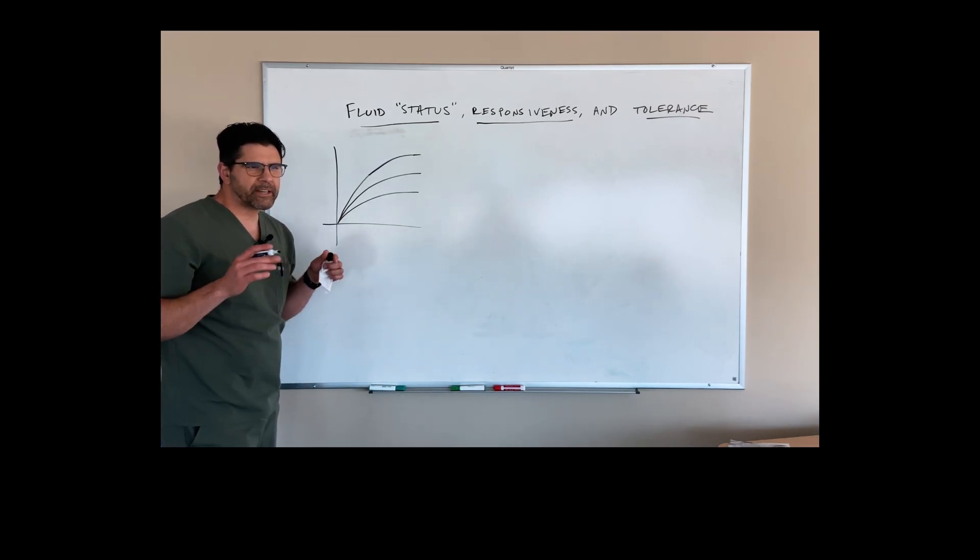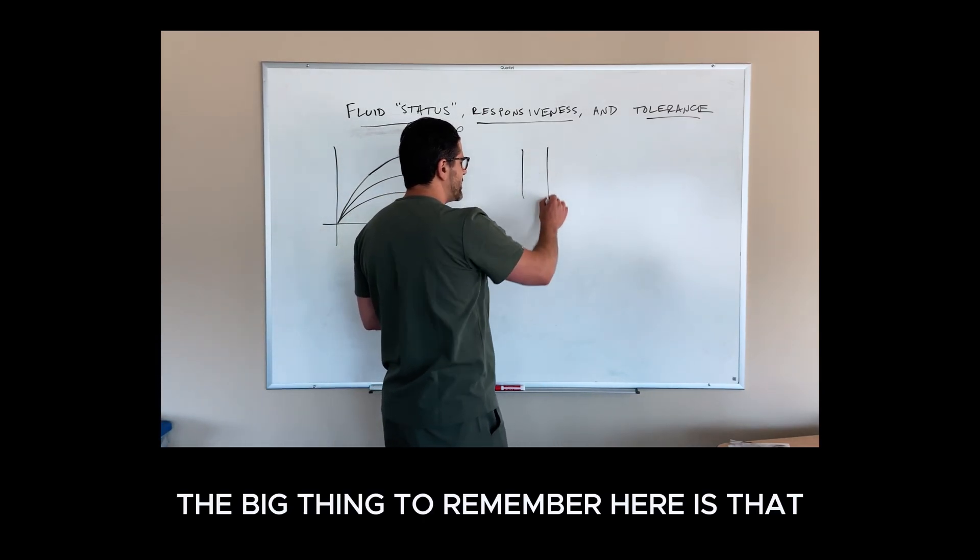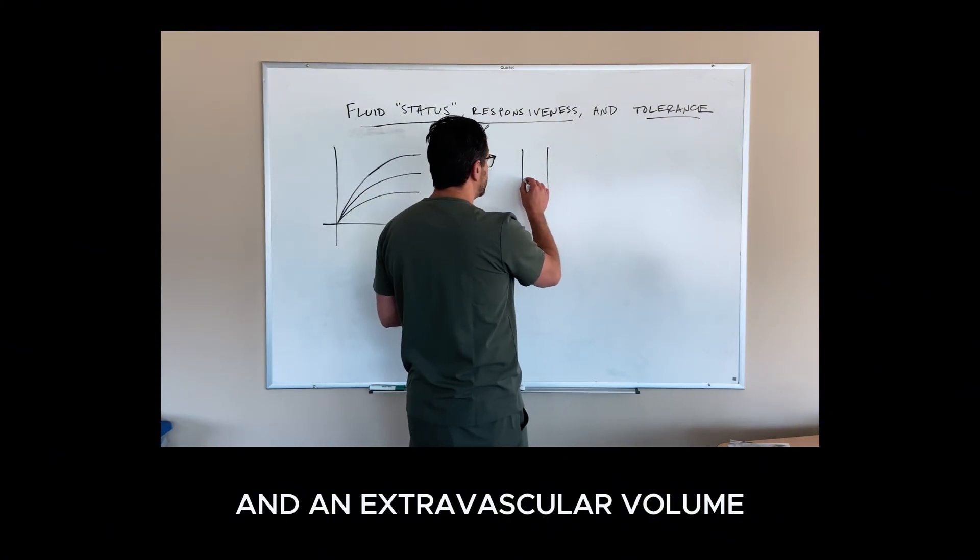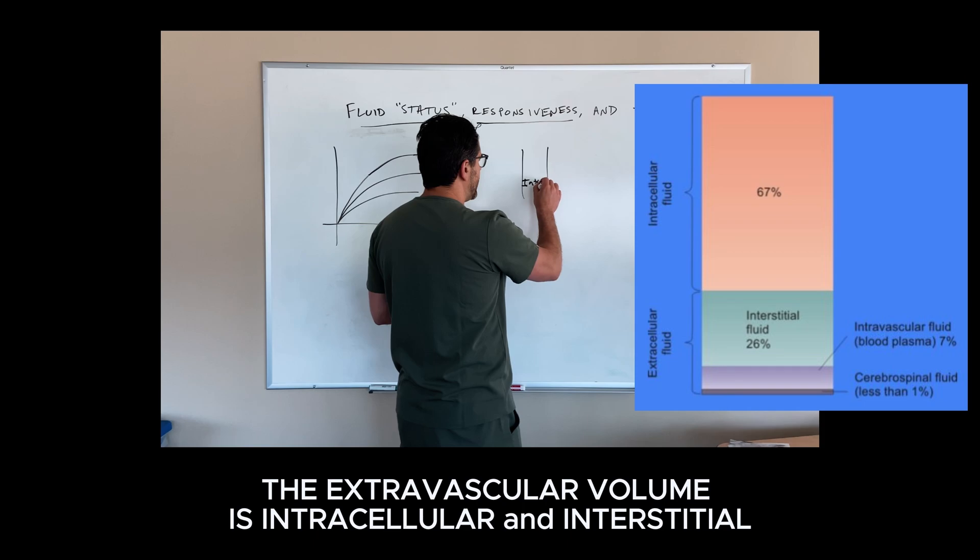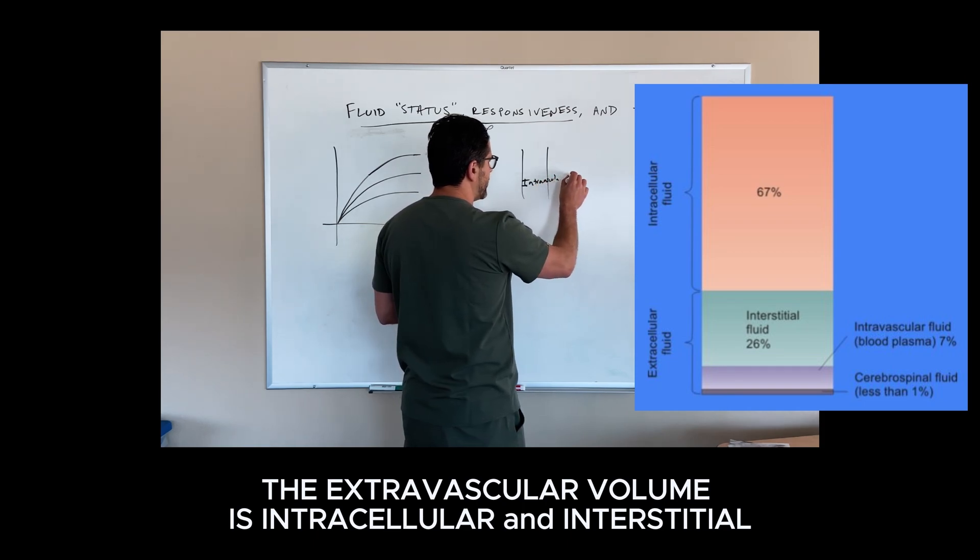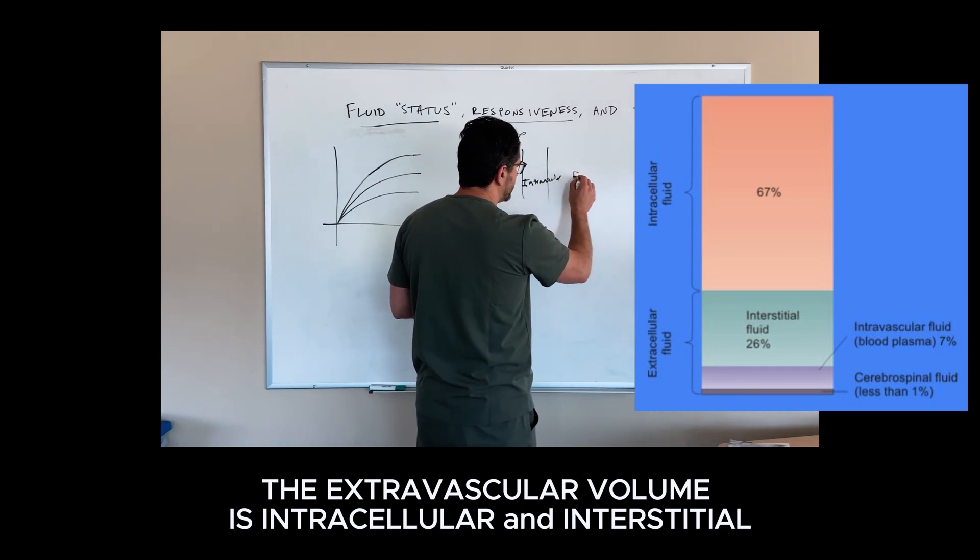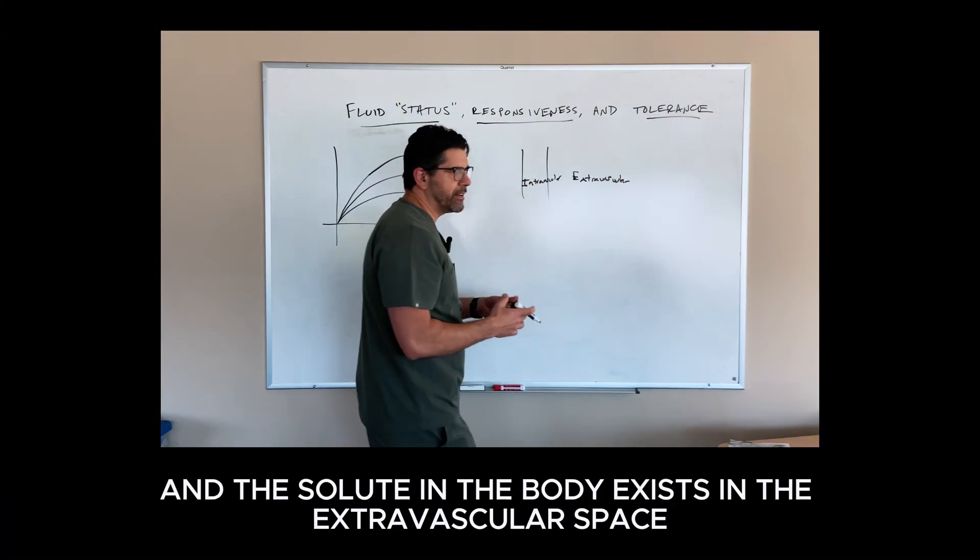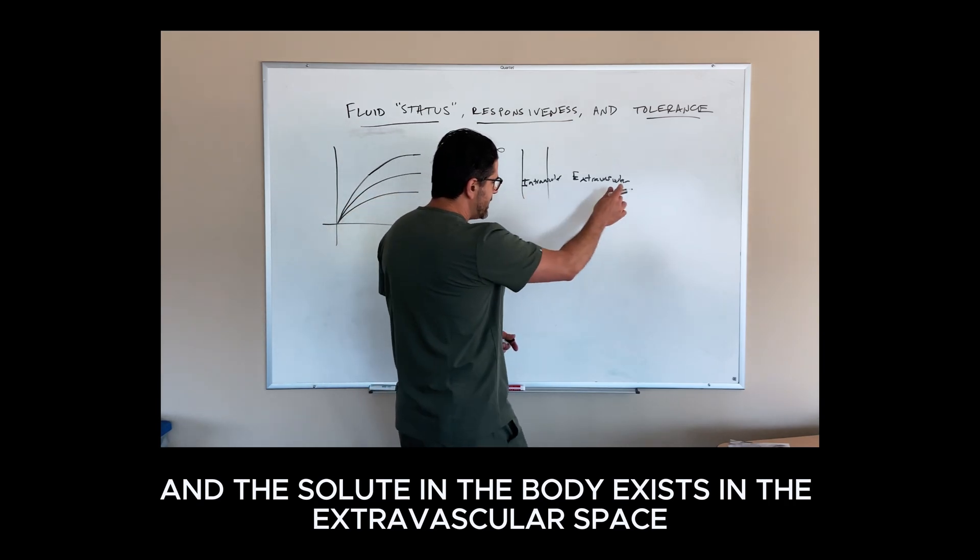First of all, when we talk about fluid status, I'm not sure what people really mean. The big thing to remember is that there is an intravascular volume and an extravascular volume. The extravascular volume is intracellular and interstitial. Most of the fluid and the salt and the solute in the body exists in this space.